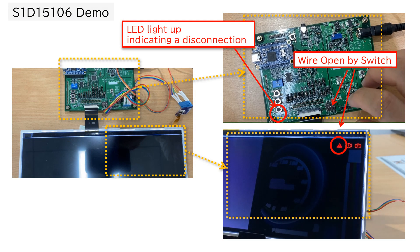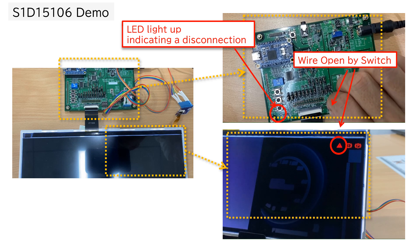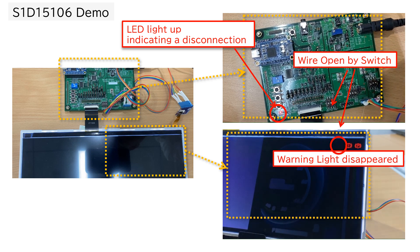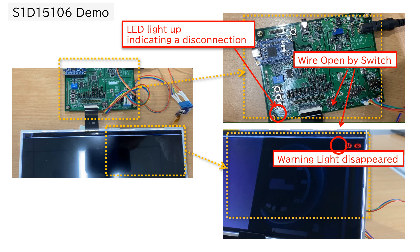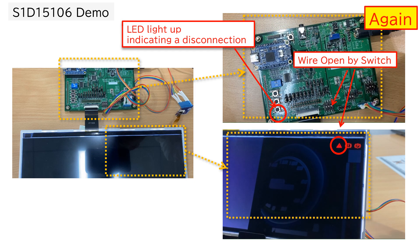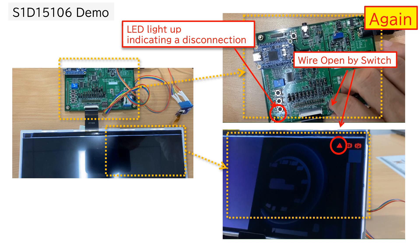This is a demonstration of safety features. When a wire is disconnected by the mechanical switch, the warning light disappeared and the LED indicating error detection lights up. The warning light is then recovered.